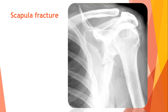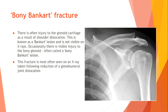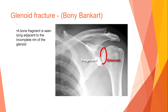Here is an example of a scapula fracture. Bony Bankart fracture — there is often injury to the glenoid cartilage as a result of shoulder dislocation, known as a Bankart lesion, which is not visible on x-rays. Occasionally there is visible injury to the bony glenoid, called a bony Bankart lesion. This fracture is most often seen on an x-ray taken following reduction of a glenohumeral joint dislocation, where a bone fragment is seen lying adjacent to the incomplete rim of the glenoid ring.